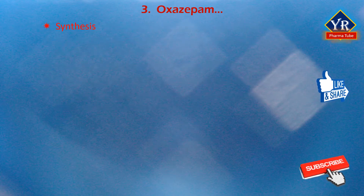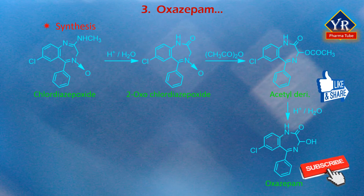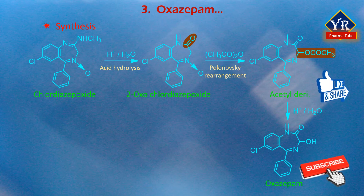Synthesis of Oxazepam: Oxazepam is synthesized from chlordiazepoxide, which upon acid hydrolysis forms 2-oxochlordiazepoxide. This 2-oxochlordiazepoxide undergoes acetylation with acetic anhydride in a reaction known as the Polonowski rearrangement, giving an acetyl derivative which upon acid hydrolysis yields the desired product, Oxazepam.